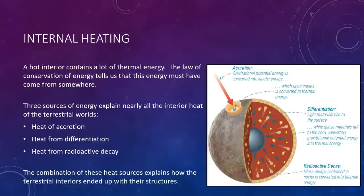Three sources of energy explain nearly all the interior heat of the terrestrial worlds. First, we have heat of accretion. Accretion deposits energy brought in from afar by colliding planetesimals. As a planetesimal approaches a forming planet, its gravitational energy is converted into kinetic energy, which causes it to accelerate. Basically, it accelerates as it gets nearby. Upon impact, much of that kinetic energy is then converted into heat, adding to the thermal energy of the planet.